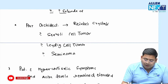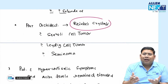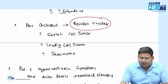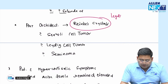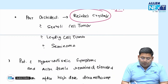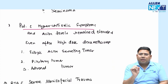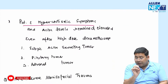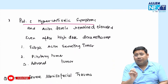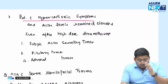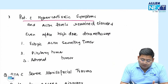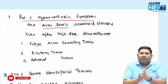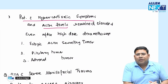Post-orchidectomy with ring crystal / Reinke crystals — this is straightforward: it is a Leydig cell tumor, a benign Leydig cell tumor.